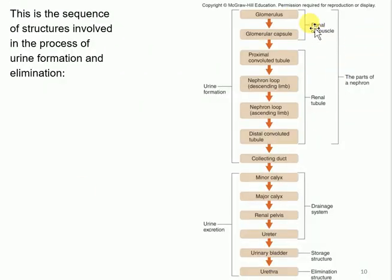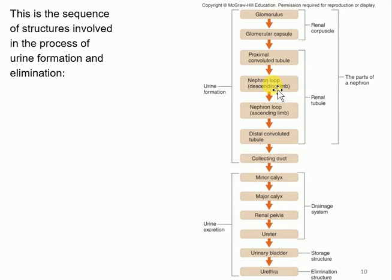The full sequence from afferent to outside: afferent → glomerulus (filtrate exits) → capsule → proximal convoluted tubule → descending loop of Henle → ascending loop → distal convoluted tubule → collecting duct → minor calyx → major calyx → renal pelvis → ureter → bladder → urethra. This sequence is very important to remember; you may be given any part and asked to provide the correct order.